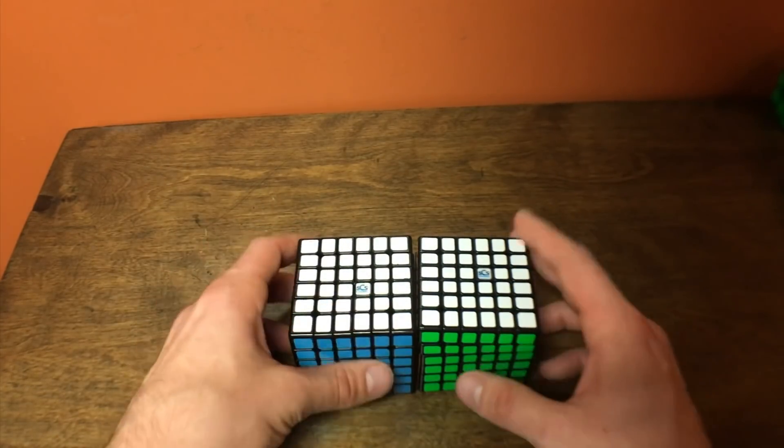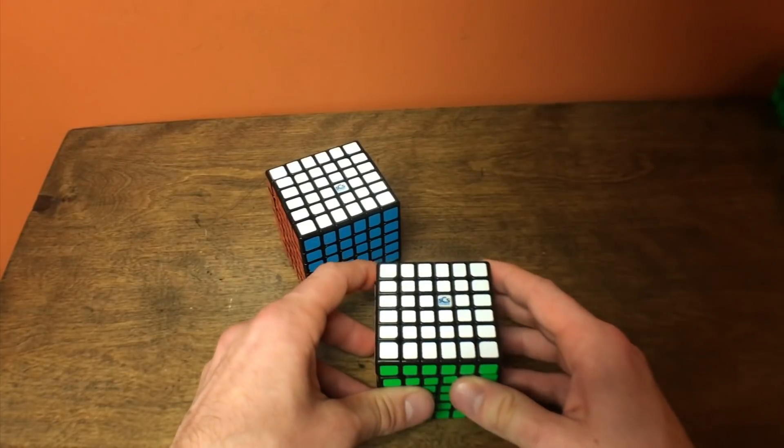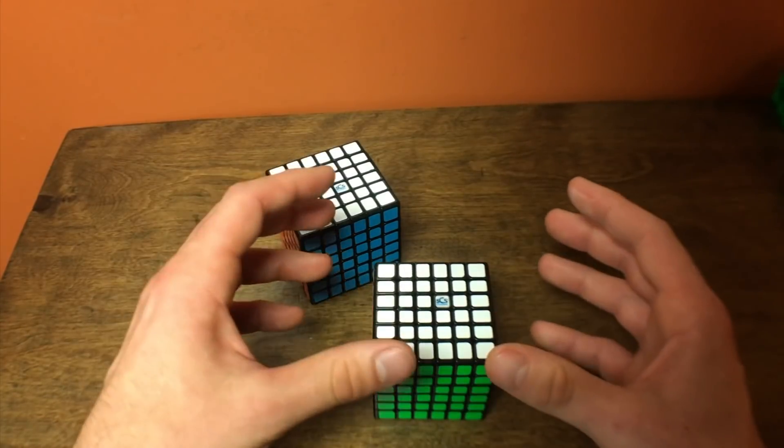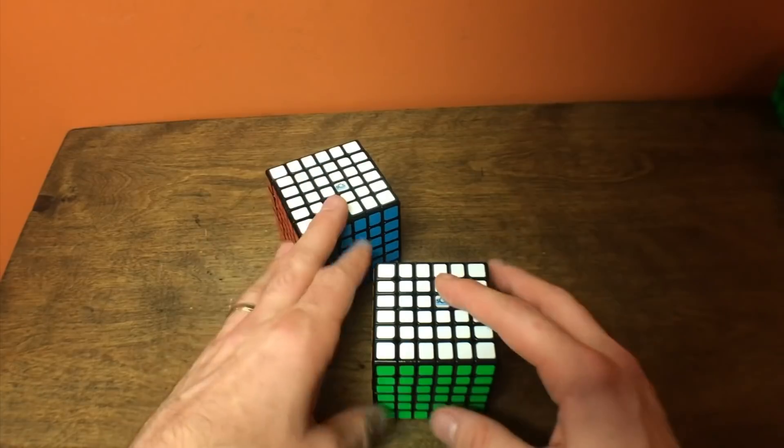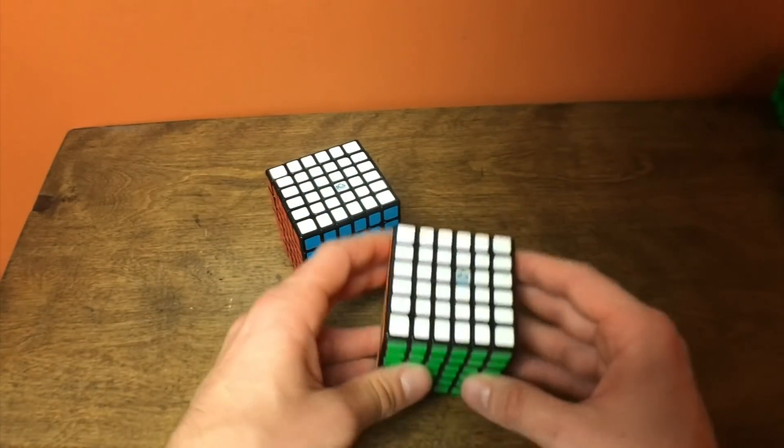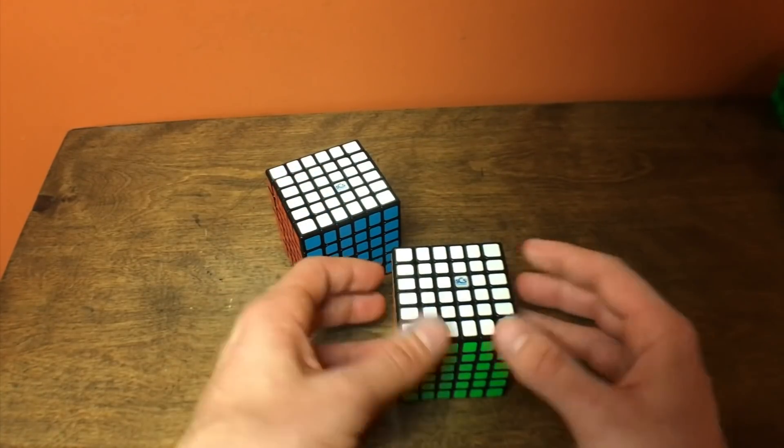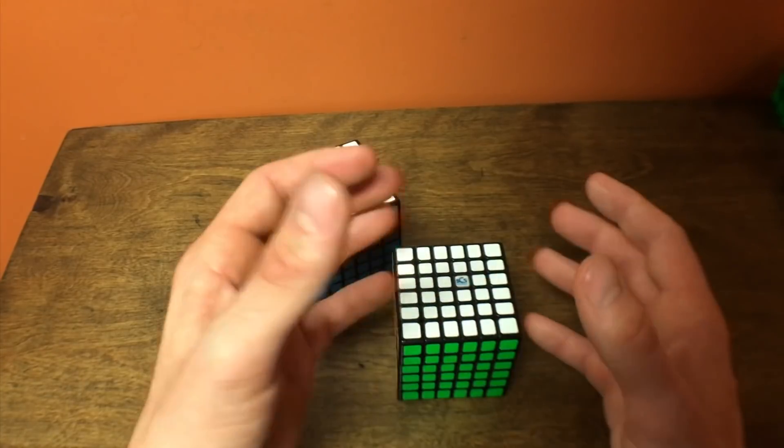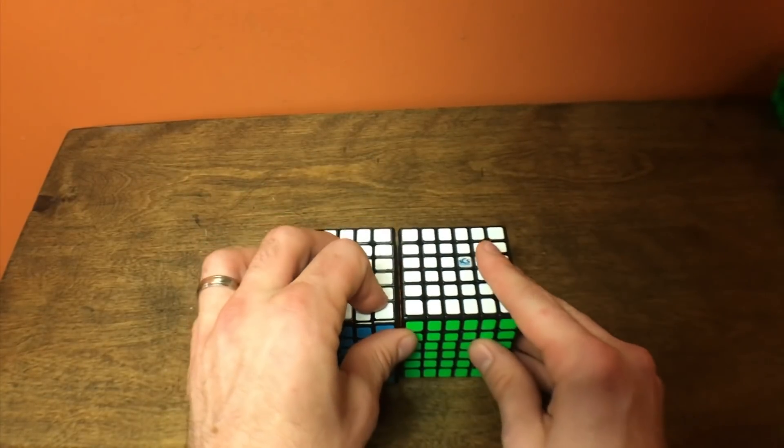I ended up using the Yushin Red. Blake Thompson also used one of my puzzles, and I gave him the choice between the two, and he tried them, and he also chose the Yushin Red. Not to say that this is an overall better puzzle, but just felt more comfortable at that time. It's hard to say.